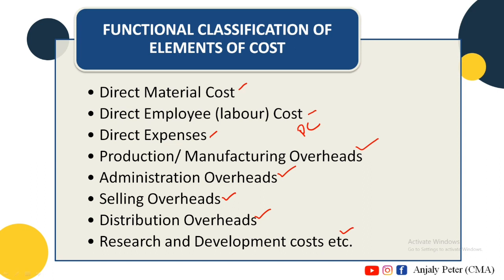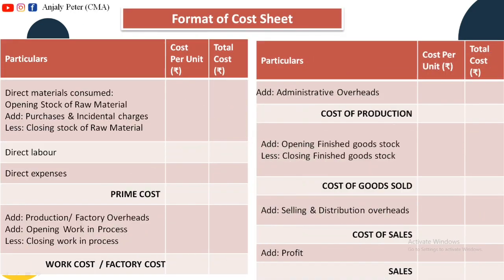We are going to prepare a Cost Sheet. This is the format of a Cost Sheet. In our Cost Sheet, there are three columns: a particular column, a cost per unit, and a total cost. Cost per unit shows how much cost per unit contributes to total cost.